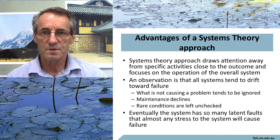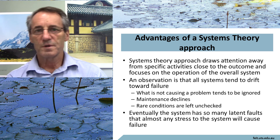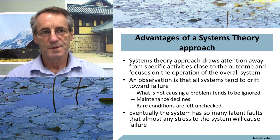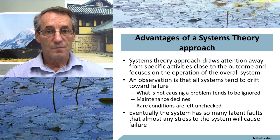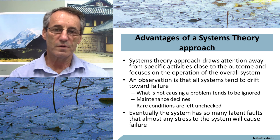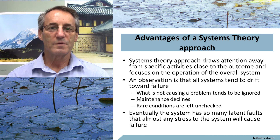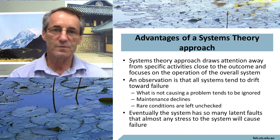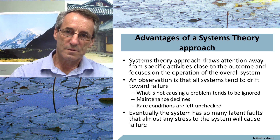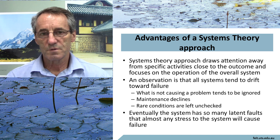The system theory model also tends to reduce the tendency to use hindsight to assess something. Hindsight means that given the outcome, it's very easy to go back and detect the trail leading toward it. We see that with terrorist attacks — given that we know a bomb went off, it's very easy to go back and find all the information available at the time. The only problem is that all that information is only evident in hindsight. Now that we know the outcome, its significance becomes apparent, but before the event its significance was not apparent — otherwise it would have been acted on. So the system theory model tends to reduce this tendency toward hindsight bias, and it provides a very disciplined structure with which to examine things.